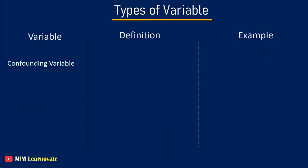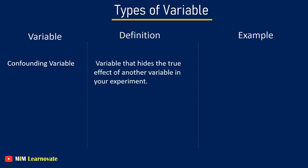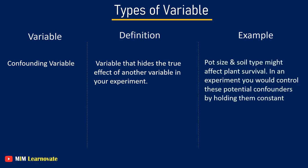Confounding variable. A variable that hides the true effect of another variable in your experiment. This can happen when another variable is closely related to a variable you are interested in, but you haven't controlled it in your experiment. For example, pot size and soil type might affect plant survival as much or more than salt additions. In an experiment, you would control these potential confounders by holding them constant.